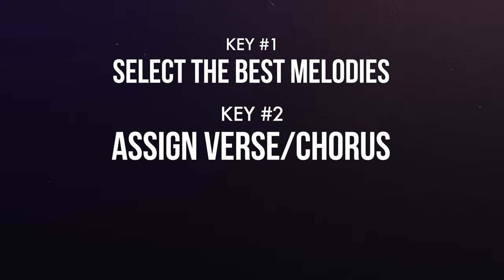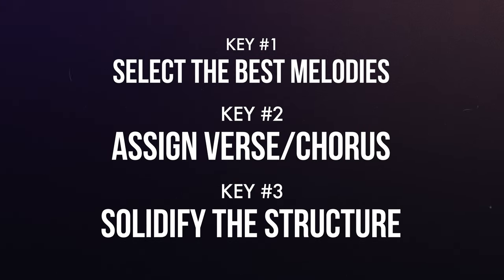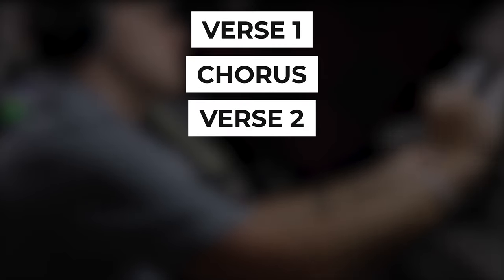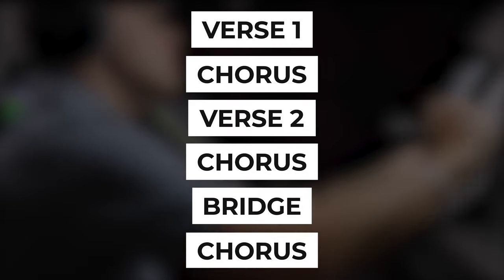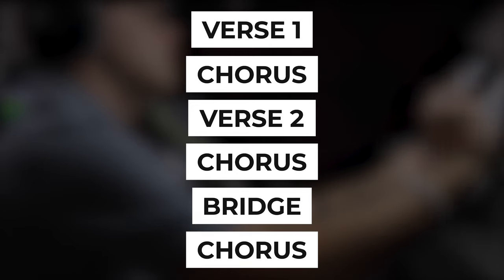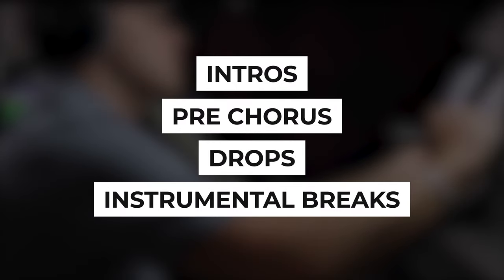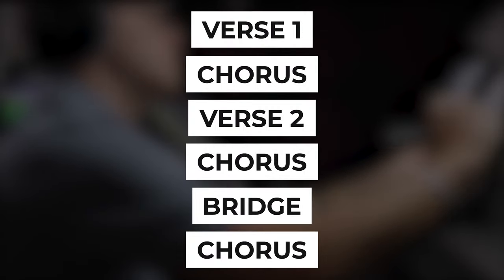Once you've got the melodies down, the last thing to do is solidify the overall structure of your song. The structure I chose for 'Now' was: Verse 1, Chorus, Verse 2, Chorus, Bridge, Chorus. Obviously there are countless different song structures you can choose, and many elements including intros, pre-choruses, drops, and instrumental breaks that we didn't mention here, but this simple framework is a great place to start.